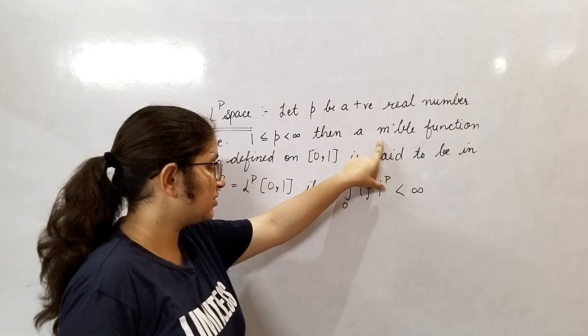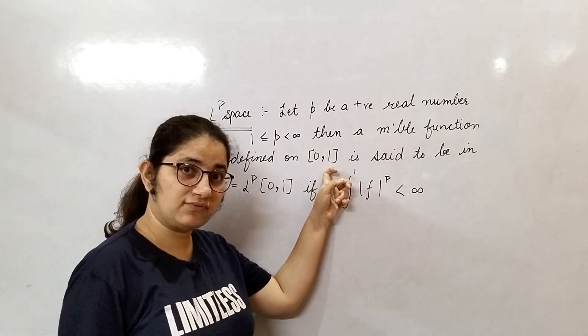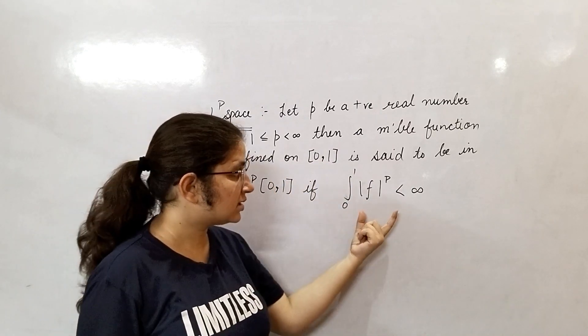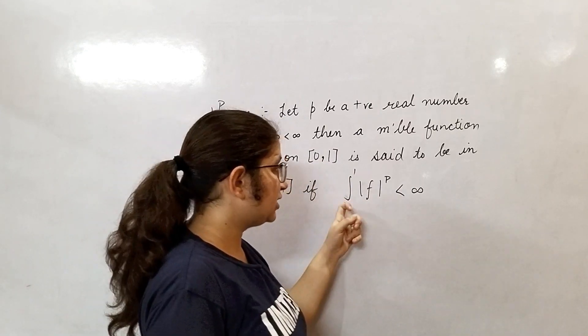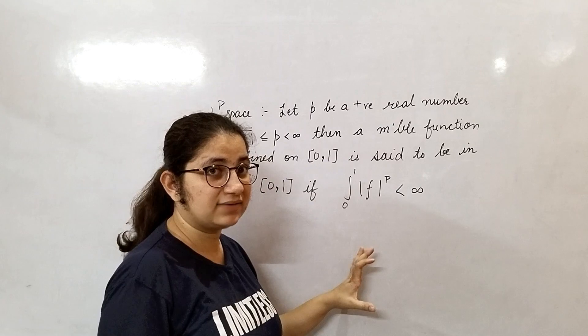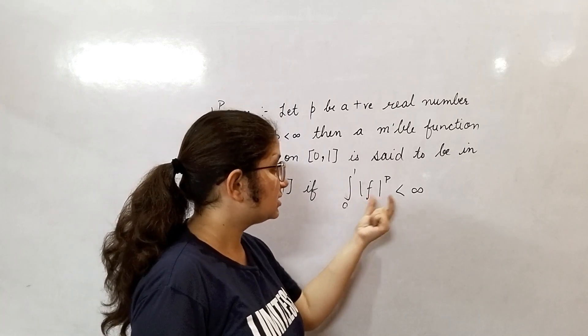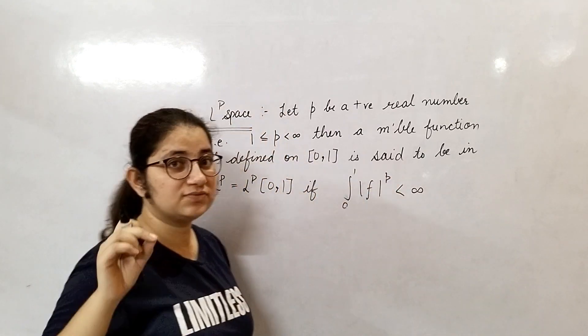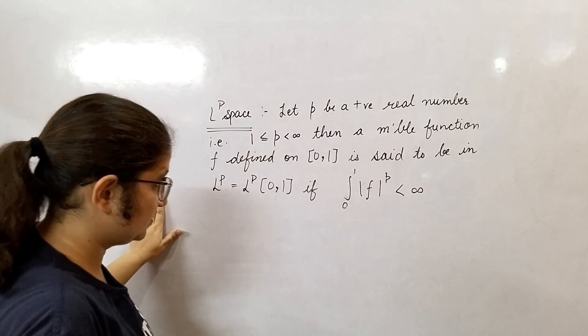Firstly we will consider measurable functions. Second, the domain of that function will always be 0, 1. And third, what is the condition? The condition is that whenever you integrate the modulus of that function raised to the power P, you will get that is always finite. This is your LP space.